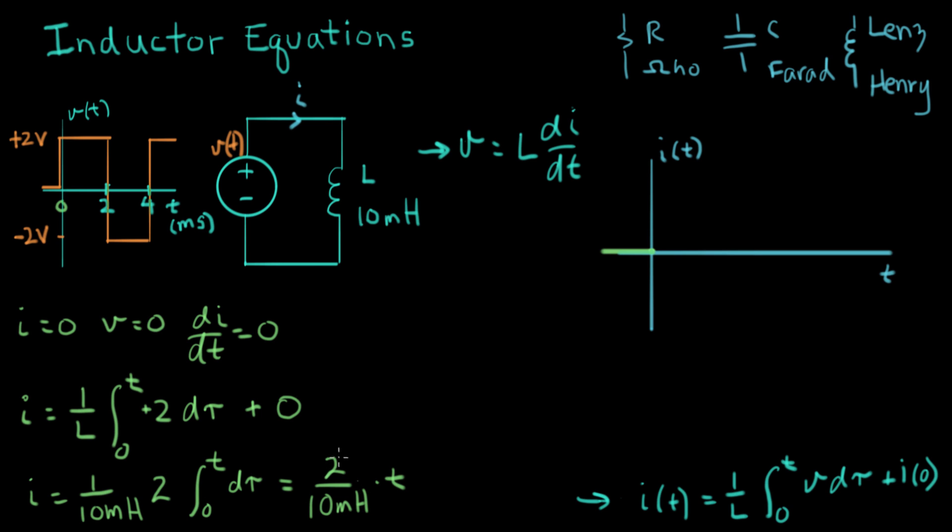So two over 10 millihenries is the slope. And to plot that line, what I need is two points on the line. I know one of the points already. I know one of the points is going to be right there at zero, zero. What is the current at the end of this pulse here? So at two milliseconds, let's figure out what the current is. And that equals, at two milliseconds,